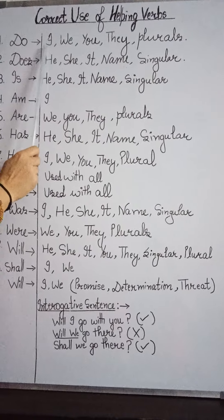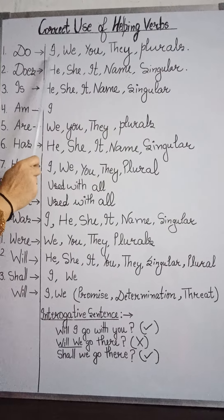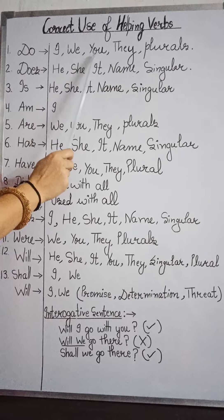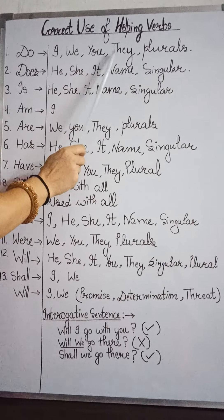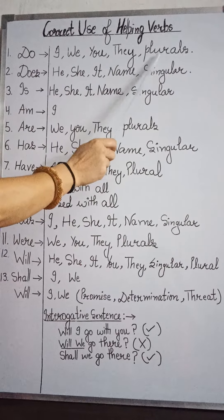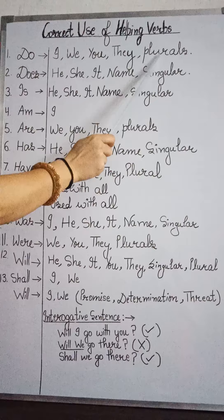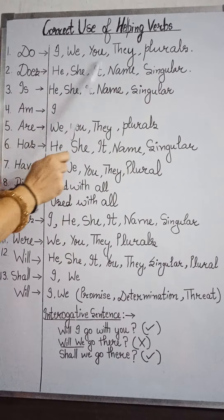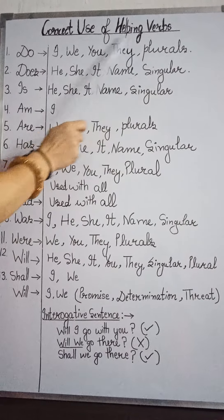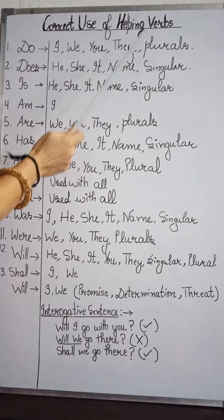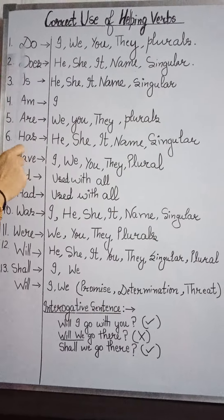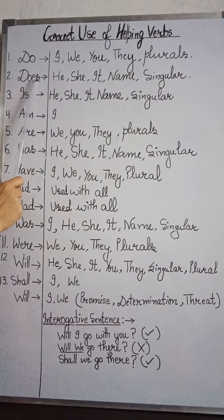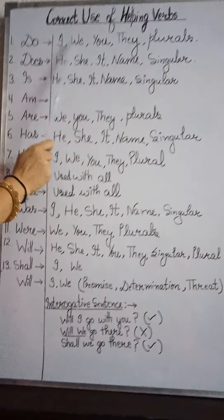I have told you: 'do' is used with I, we, you, they, and plurals. When we talk about a particular sentence, we use 'do,' not 'does.' So you have to remember these things. 'Does' is used with he, she, it, and names — singulars.